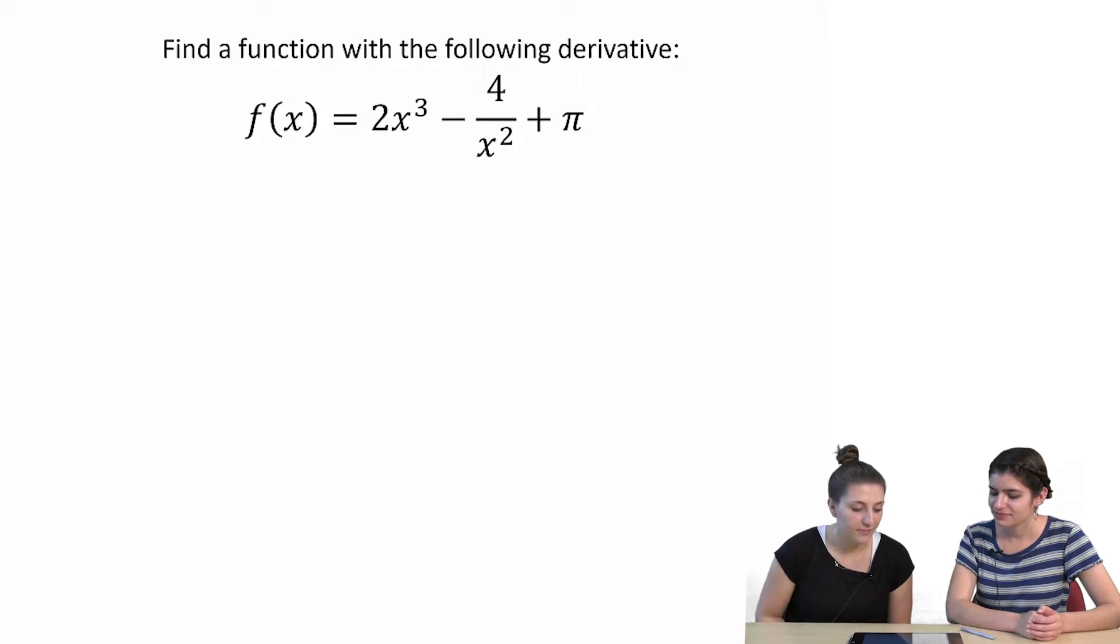Find a function with the following derivative: f of x is equal to 2x cubed minus 4 over x squared plus pi.